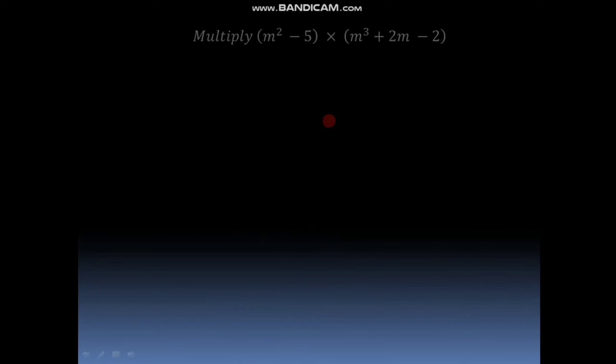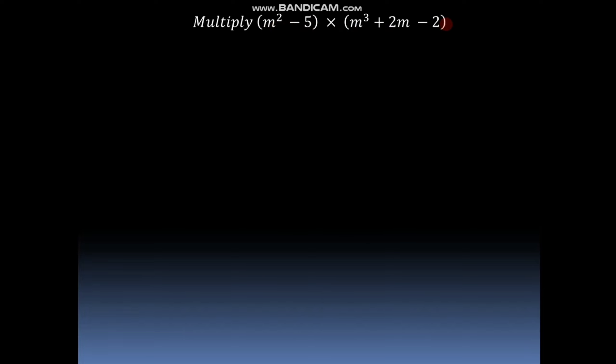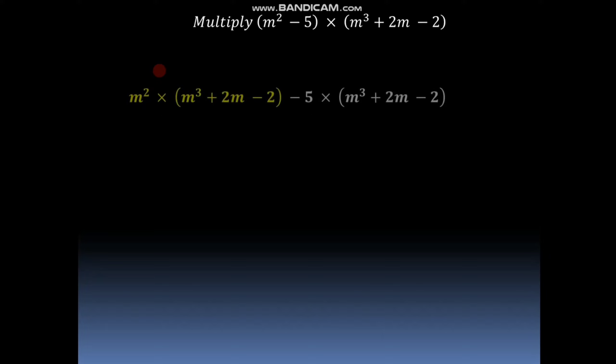Let us have another example. The question is: multiply m square minus 5 into m cube plus 2m minus 2. This is the example of a product of a binomial and a trinomial. In the first polynomial there are two terms so it is called a binomial, and in the second polynomial there are three terms so it is called a trinomial. Now let us see how to multiply these two.